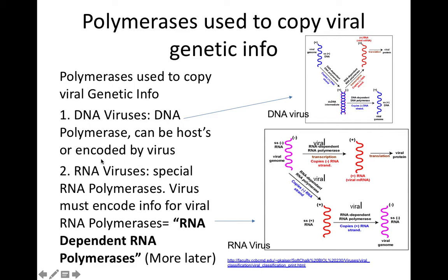Where it gets really complex is when we're talking about RNA viruses. RNA viruses have to make copies of their viral RNA. This is tough because our cellular RNA polymerase uses DNA as a template to make messenger RNA, tRNA, or rRNA for our cells. But RNA viruses' template would be their RNA genome. So RNA viruses have to have an enzyme that can use RNA as a template to make complementary RNA.